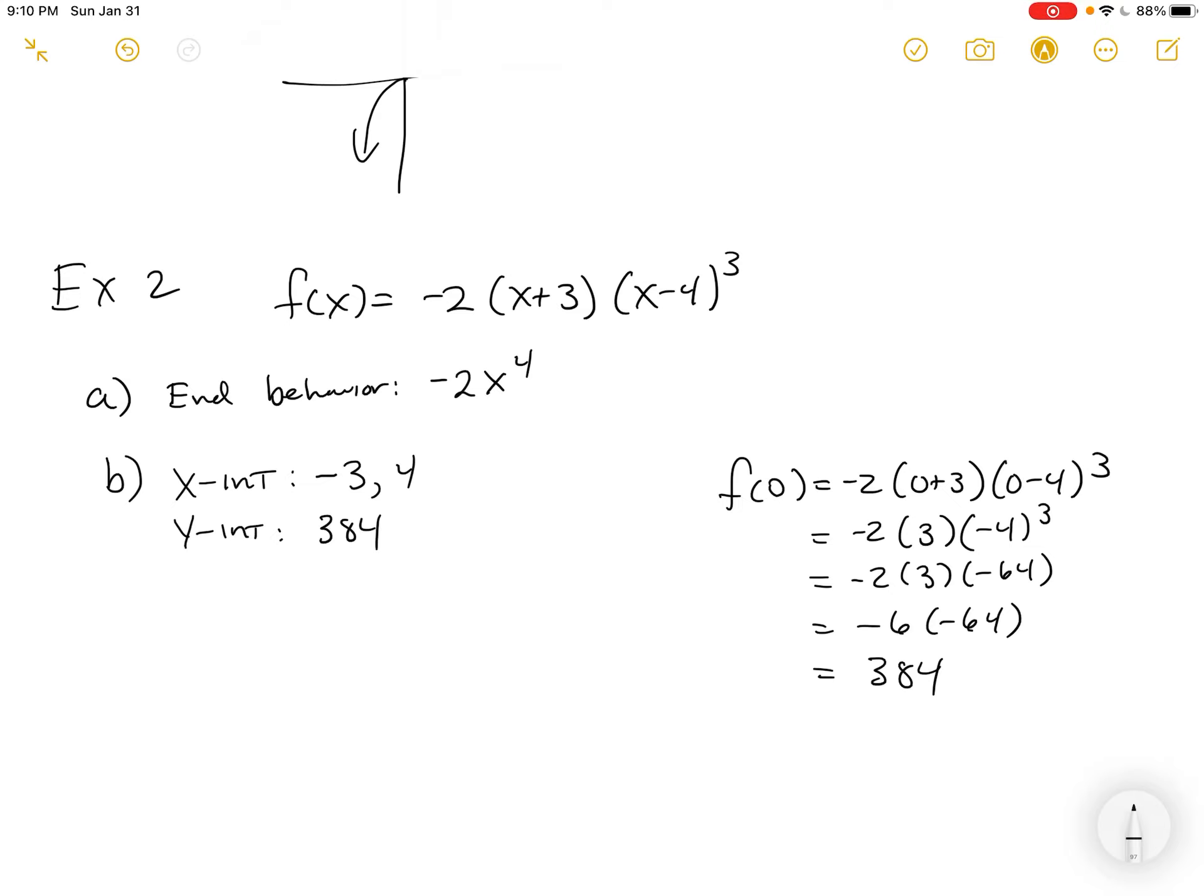Really big at that point. But that's what a y-intercept is. It's where x is 0. C wants to know the zeros and the multiplicities of them. So, we know the zeros are negative 3 and 4. The multiplicity of those zeros is 1 and 3. And so, c or t, it crosses in both cases.